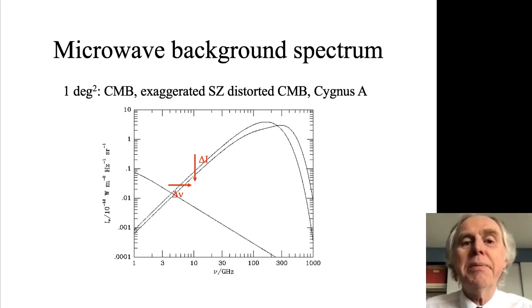The diagonal line is the spectrum of Cygnus A. I've drawn it at the location on this picture that it would be if you tried to observe Cygnus A with a one square degree beam. The point I want to make is that even such a bright radio source as Cygnus A, one of the dominant radio sources in the radio sky, is puny compared with the microwave background radiation once you get to high frequencies. It's even small compared with the Sunyaev-Zel'dovich effect once you get above about 80 gigahertz.